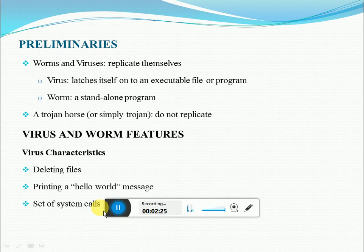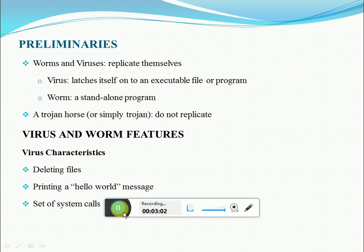Next we'll discuss the features of viruses and worms, starting with virus characteristics. When a virus-infected program is run, the virus code is executed first. One of the tasks of the virus code is to seek other programs that are not yet infected — similar to a coronavirus, the infected file spreads the virus to other uninfected files. These viruses may then perform actions such as deleting certain files.